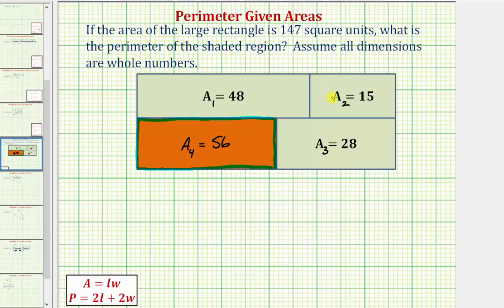Since the area is 15 square units, the dimensions would have to be either one by 15 or three by five. Let's use three by five. If three by five didn't work, we'd come back and try one by 15. If we know this length is three units, then the opposite length would also have to be three units.